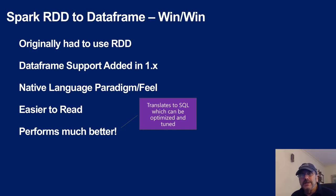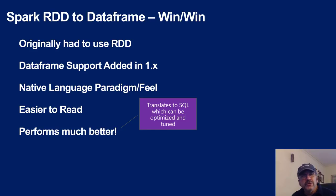RDDs don't have much information for the engine to optimize. But when you use DataFrames or SQL, the Spark engine knows what columns you want, whether you're filtering or joining, and it can optimize accordingly. It could even push some of your query into the source system — like Cosmos DB — if it understood enough about what you're doing.